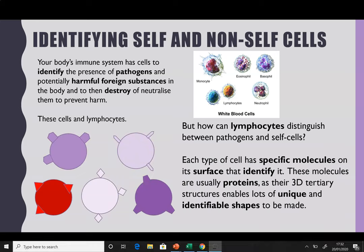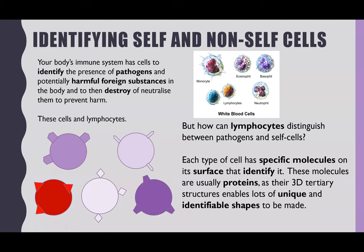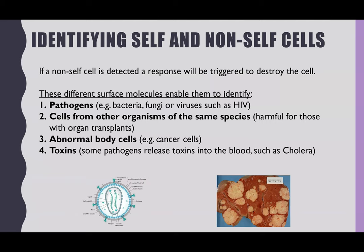So how are lymphocytes able to do that? Each type of cell has its own unique specific molecule on its cell surface membrane, and that acts as a marker to identify it — as shown in these diagrams. Each cell has its own unique shape on the outside, which is its identifying molecule. It's normally a protein, because proteins are 3D tertiary structures and therefore enable lots of unique identifiable shapes. Those shapes on the outside of cells are what the lymphocytes are recognising, and we call those antigens. Once detected, the immune response will be triggered to destroy the cell.